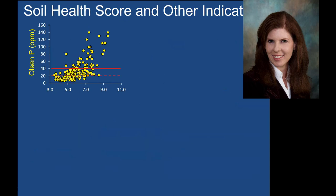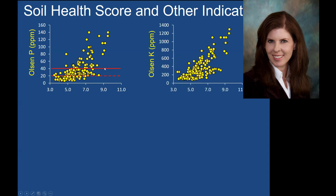We also have to look at other indicators in the soil. On a graph with soil health score on the x-axis and other indicators on the y-axis: Olsen P is a big concern for our producers, as dairymen are regulated by Olsen P levels in the soil. As your soil health score increases, your Olsen P goes up dramatically. At 20 parts per million is the agronomic level where you don't expect to see a response; at 40 ppm is the threshold above which you're not allowed to apply phosphorus in many cases. We also see a similar relationship with Olsen potassium — as soil health score increases, potassium levels get quite high, which can be a real problem for forage quality and milk fever.